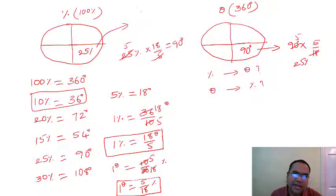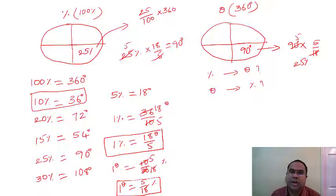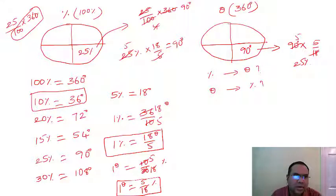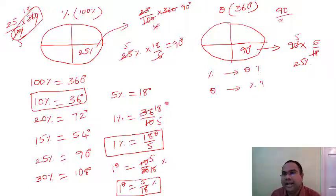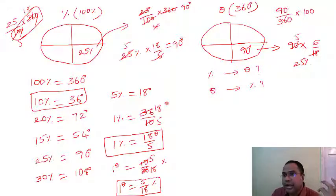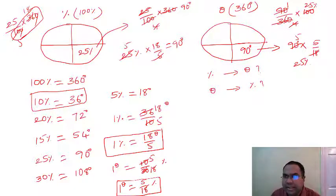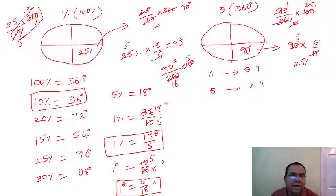The alternative method: 25% of 100% into 360 degrees — that is 25/100 × 360 = 90 degrees. To go back: 90/360 × 100 = 25%. Notice that 25/100 × 360 effectively means multiplying by 18/5, and 90/360 × 100 means multiplying by 5/18. These are the same conversion factors.